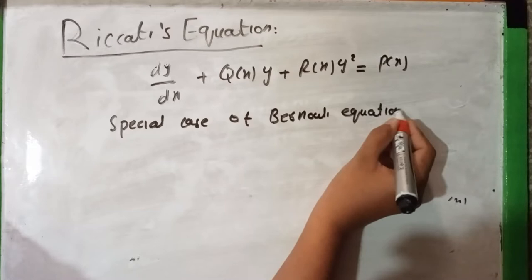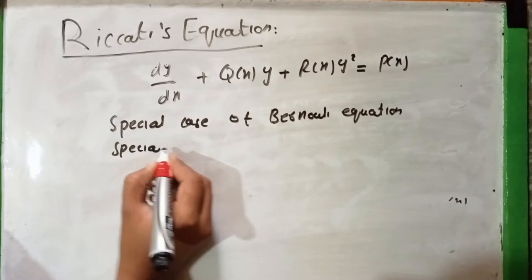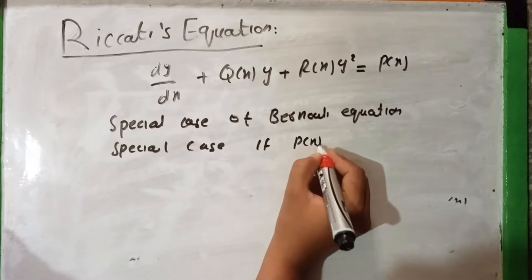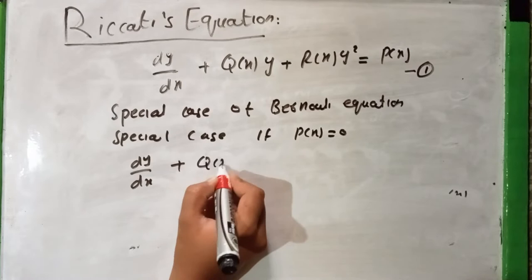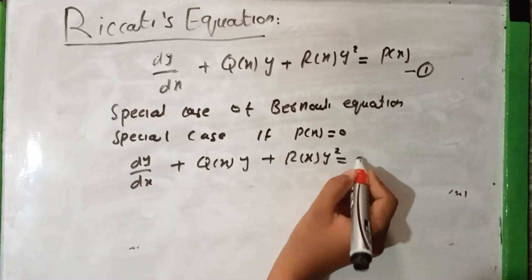Now we will discuss a special case. If p(x) is equal to 0, then equation 1 becomes dy/dx plus q(x)y plus r(x)y² equal to 0. This is equation number 2.